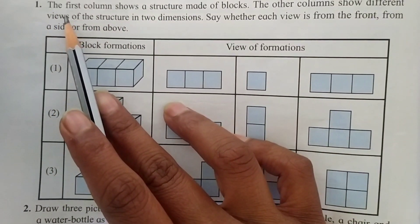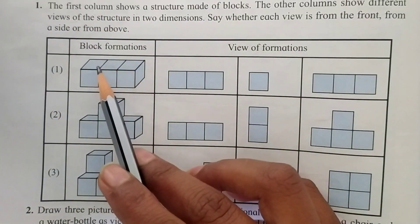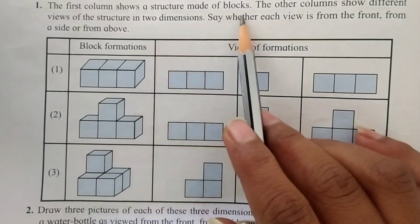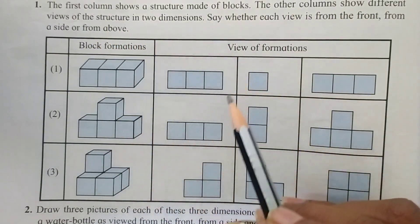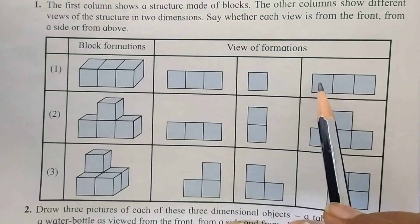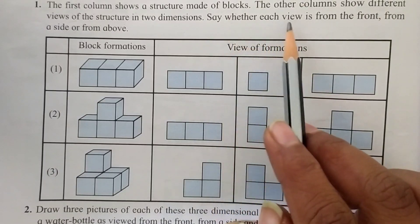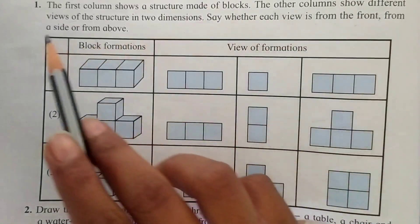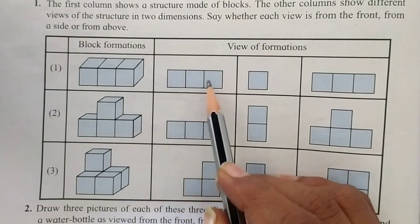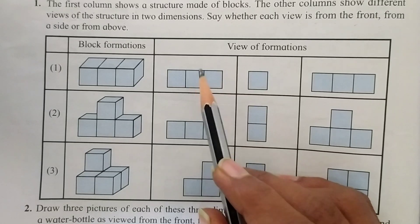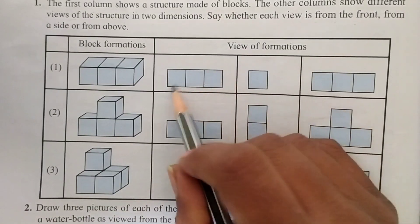Let's read the first question. The first column shows a structure made of blocks — three structures are given. The other columns show different views of the structure in two dimensions. We have to say whether each view is from the front, from a side, or from above.